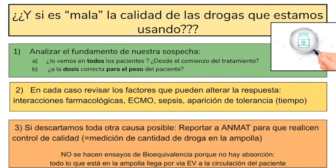Este control de calidad lo realiza siempre el laboratorio antes de lanzar algo al mercado: abren determinada cantidad de ampollas por lote, miden la cantidad, y si está correcto, está aprobado. No se hace bioequivalencia porque estamos hablando de fármacos endovenosos. Si en la ampolla que dice 100 miligramos se miden 100 miligramos, eso por vena le llega al paciente directamente a circulación. No podemos sospechar de un problema de excipientes o de bioequivalencia como lo haríamos con un comprimido o algo por vía oral.